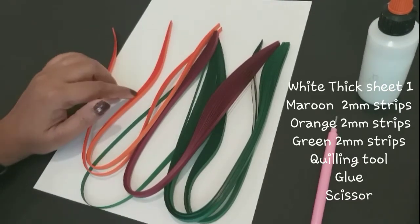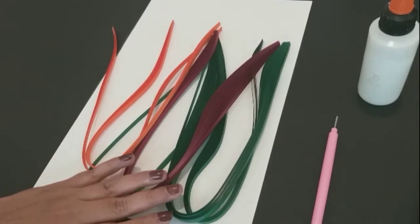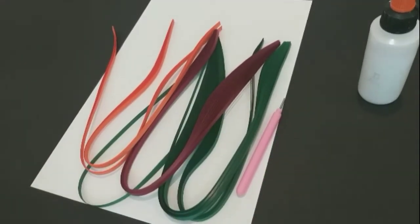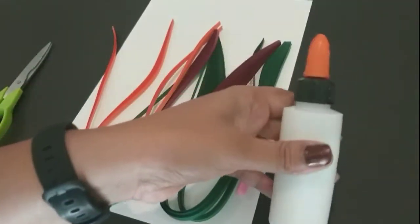We are going to use a white color thick sheet, orange color, miru color, green color strips, Quilling tool, Scissor, and glue.